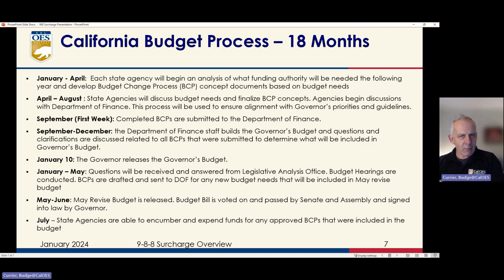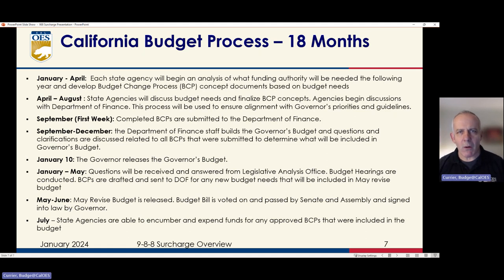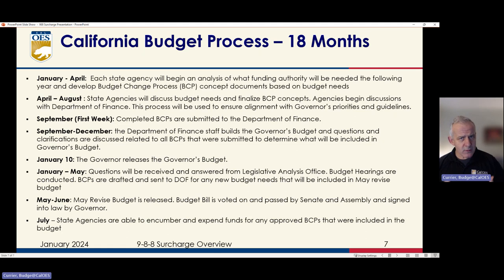The governor introduces the budget and the legislature goes back and forth to make sure that what's in the governor's budget aligns with legislative priorities. There'll be questions from the Legislative Analysis Office (LAO) and budget hearings are conducted. These hearings are public, soliciting feedback from the public and reviewing the legislative process. In May, there might be additional or unexpected revenue needs or adjustments based on that legislative process, so the May revised budget comes out. If there is a new budgetary need discovered at that point, another budget change process can be initiated to submit new budget requests.